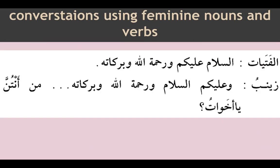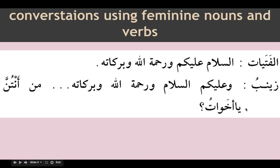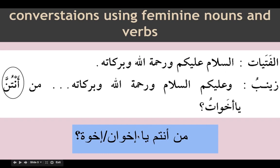Coming to the conversation: alfatyatu is the plural for fatatun, meaning young lady. So alfatyatu means young ladies. The young ladies say: Assalamu alaikum wa rahmatullahi wa barakatuhu — this is addressed to Zainab. She replies: Wa alaikum assalam wa rahmatullahi wa barakatuhu. Then: man antunna — antunna is feminine, meaning who are you all? Ya akhawatu — oh sisters — akhawatu is plural for ukht.